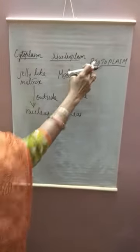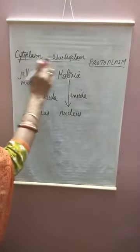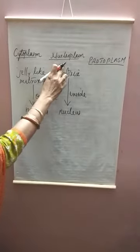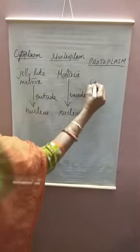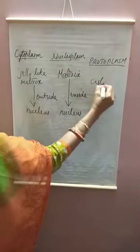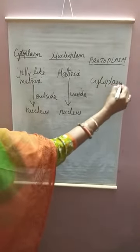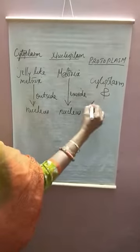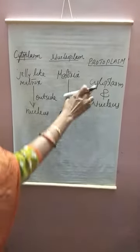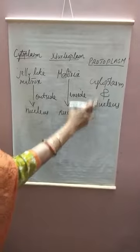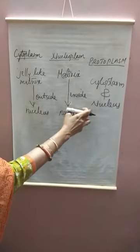Now, what is protoplasm? The cytoplasm, nucleoplasm, and nucleus together are called protoplasm. So cytoplasm and the nucleus together are called protoplasm.